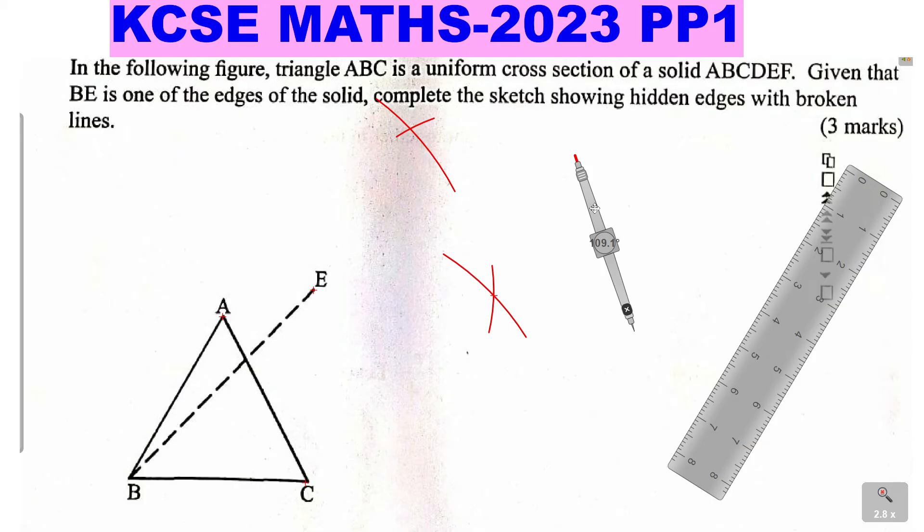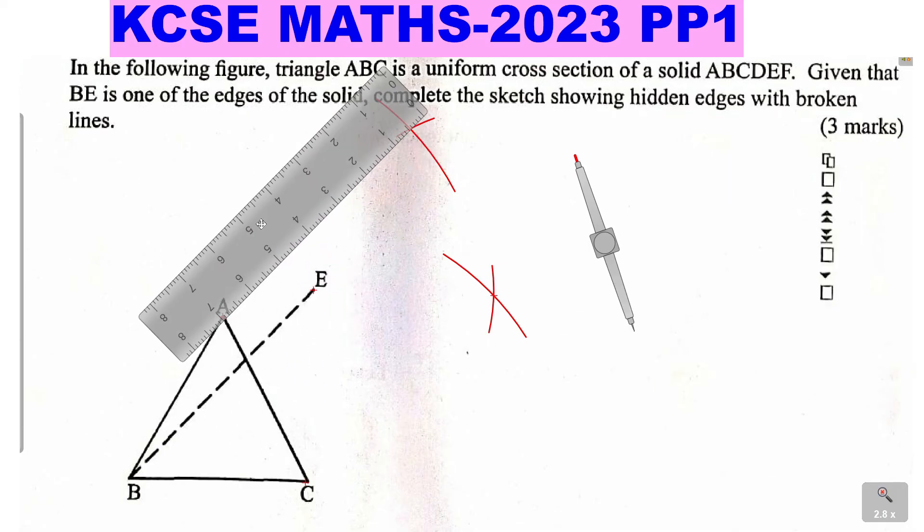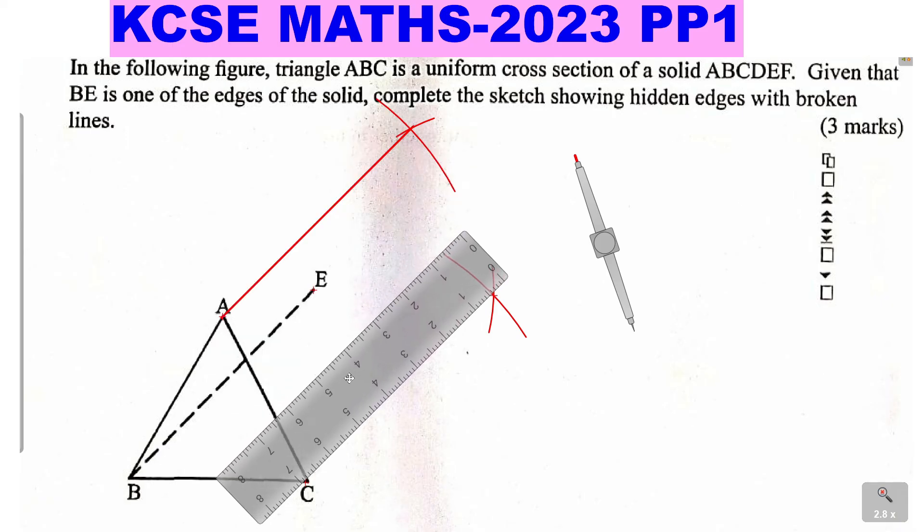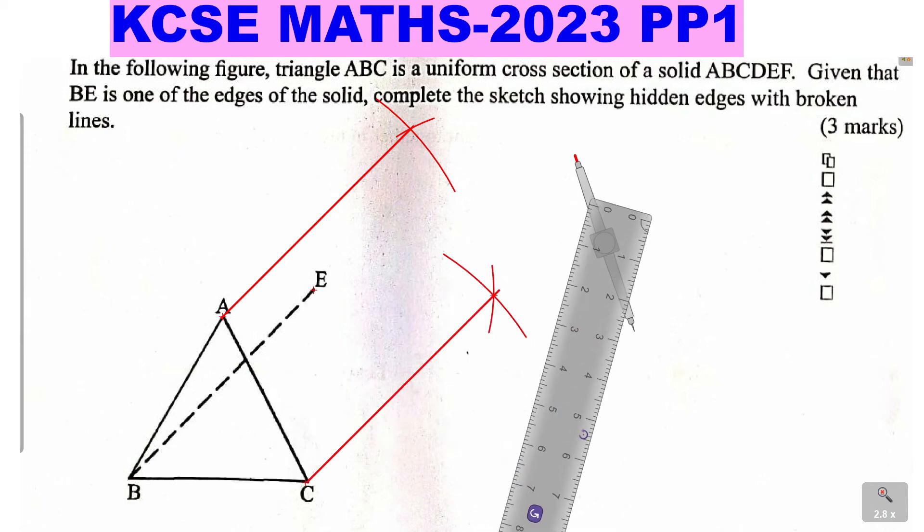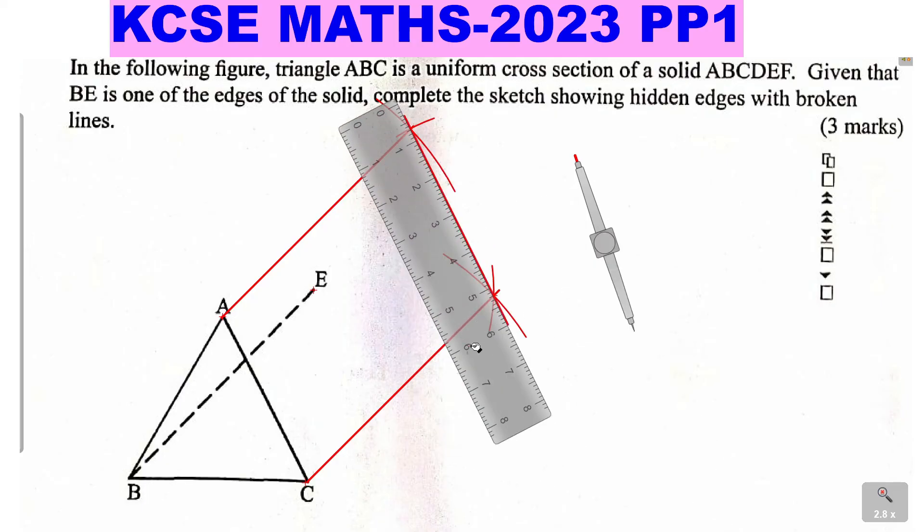So from there, take a ruler and join. We start joining this. That will be continuous line to not be hidden. Then also join this one as well. This one will also be continuous line to not be hidden. We'll start with the ones that are not hidden. And the other one is here. Join that one as well. Like that. Now we've done all the lengths that are not hidden.